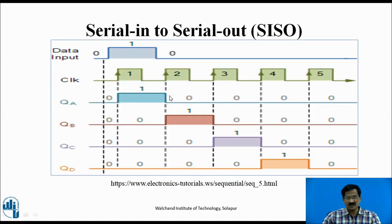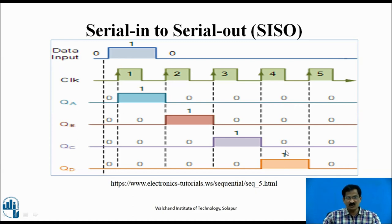This is the timing diagram for Serial-In to Serial-Out (SISO). At the first clock pulse, the first bit of information is loaded. In the second clock pulse, this bit is shifted to the next flip-flop output. The second, third, and fourth bits follow similarly. At the end of the fourth clock pulse, the information available is 0, 1, 0, 1.